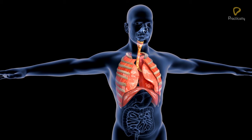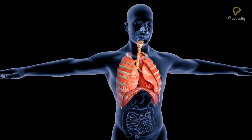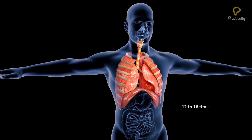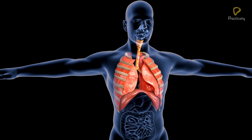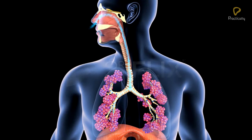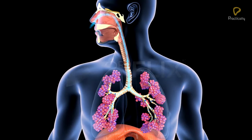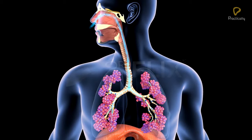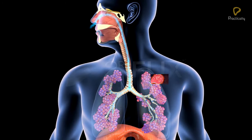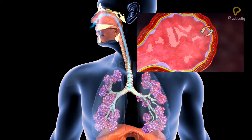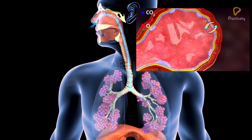A normal healthy adult breathes 12 to 16 times per minute at rest. During the breathing cycle, when air is taken in and let out, the lungs always contain a residual volume of air so that there is sufficient time for oxygen to be absorbed and for the carbon dioxide to be released.